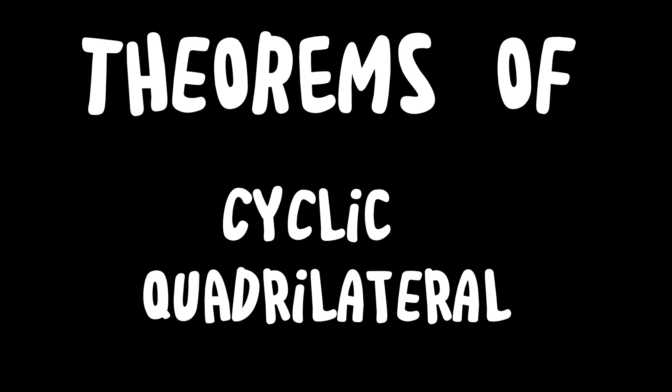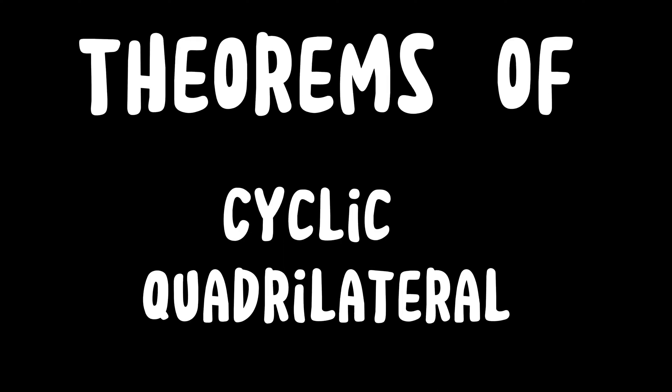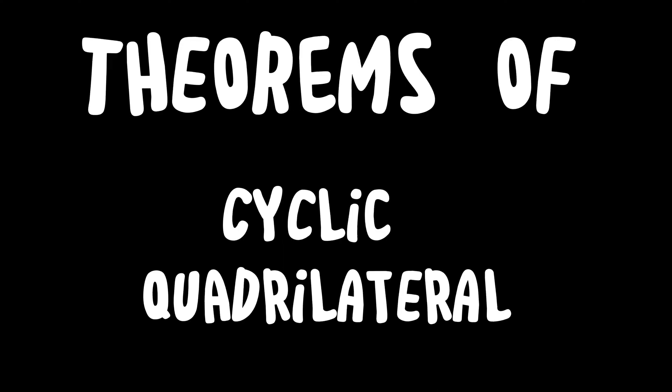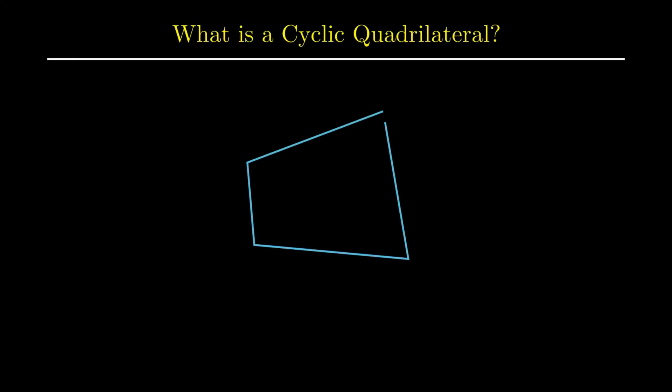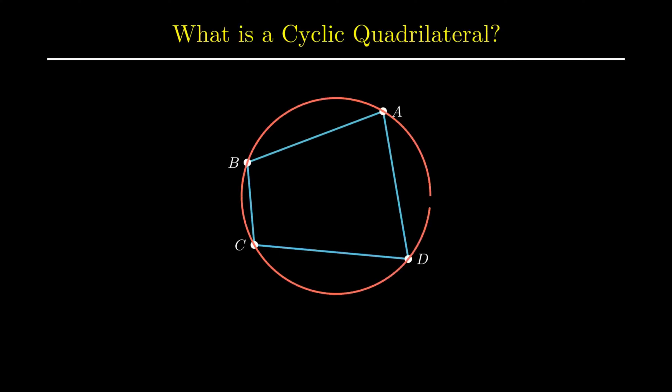In this video, we will understand the theorems related to a cyclic quadrilateral. Let us understand first what is a cyclic quadrilateral. A cyclic quadrilateral is a polygon with four sides such that its four vertices lie on a circle. After knowing what a cyclic quadrilateral is, let us continue with the theorems related to it.